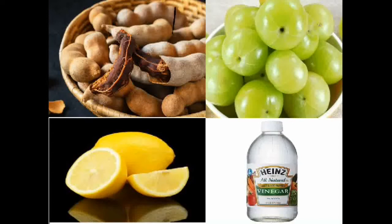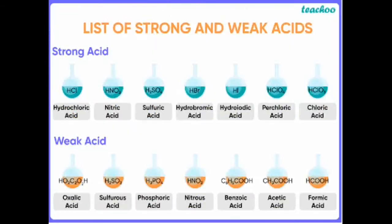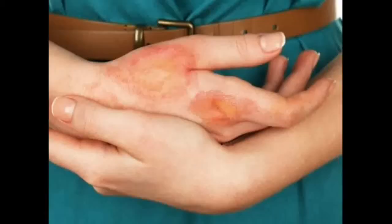There are two types of acids: strong acids and weak acids. Strong acids are completely different from weak acids. Strong concentrated acids are very harmful to your skin. If strong concentrated acids are sprinkled on your skin, your skin gets burnt.